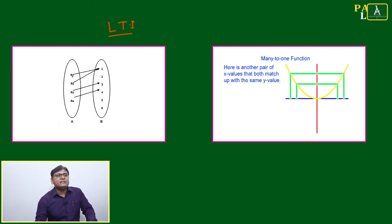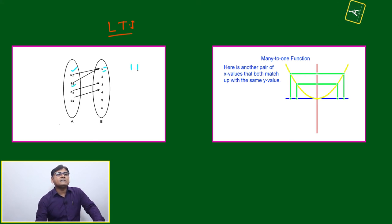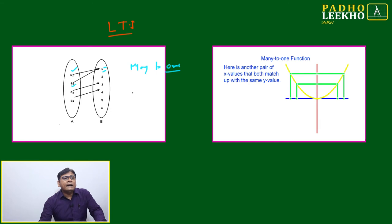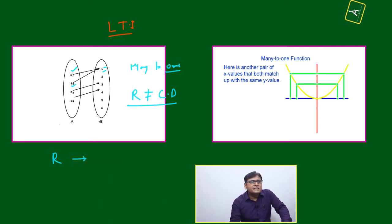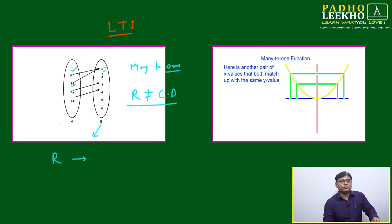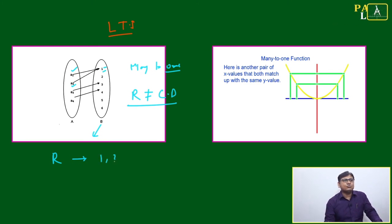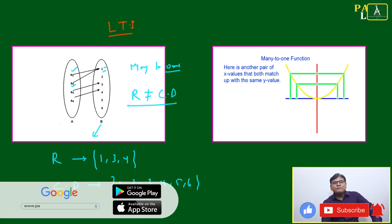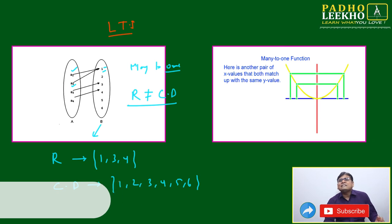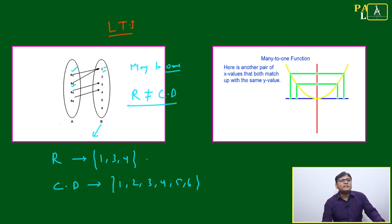This is Set A and this is Set B. If input A1 gives output 1, and input A2 also gives output 1, then directly we can say it is many-to-one. In a many-to-one function, range may or may not equal codomain. Here the exact outputs are 1, 3, and 4, so range = {1, 3, 4}. Codomain is the full Set B = {1, 2, 3, 4, 5, 6}. Domain is {A1, A2, A3, A4}.